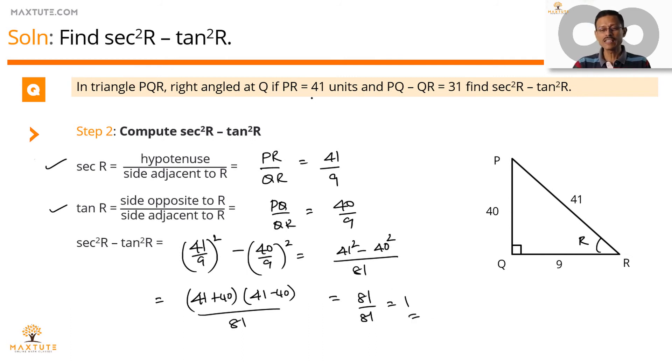This will be true irrespective of the values of PR, QR. And this is a standard identity, which we'll be learning down the line. So secant square R minus tan square R equals 1. Or the other way, the same identity we'll be learning a little while down the line will be secant square R is equal to 1 plus tan square R. This is just a preview to that right now.